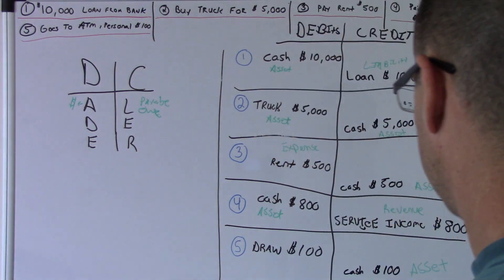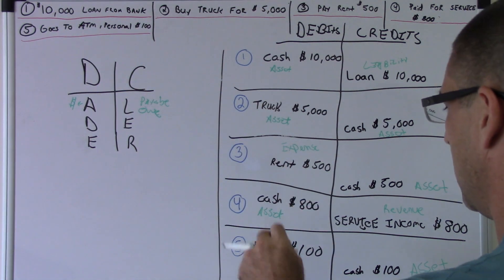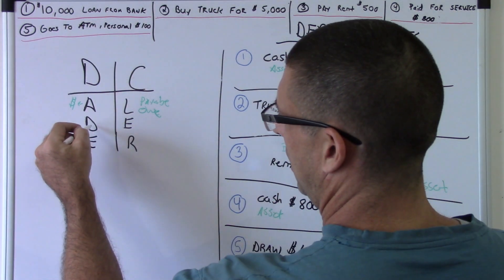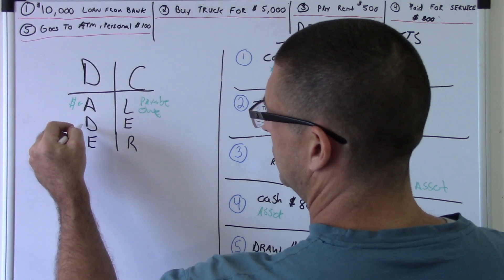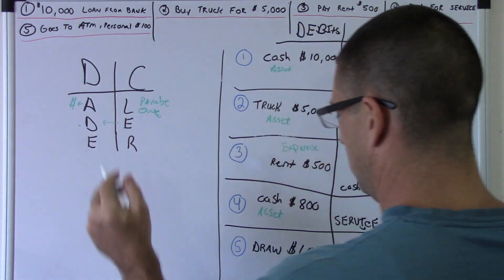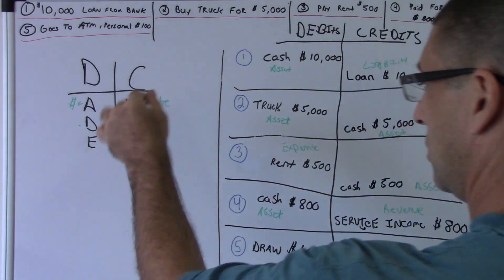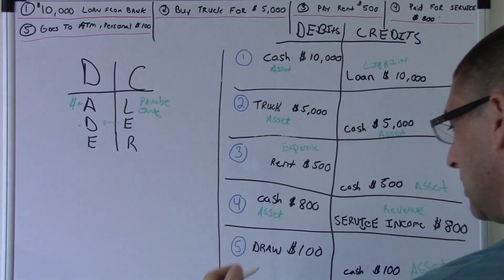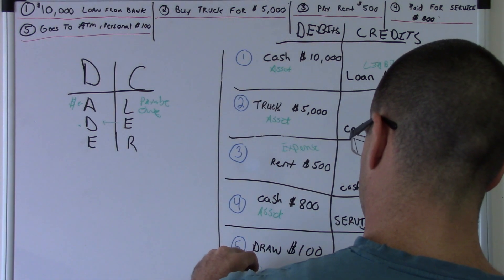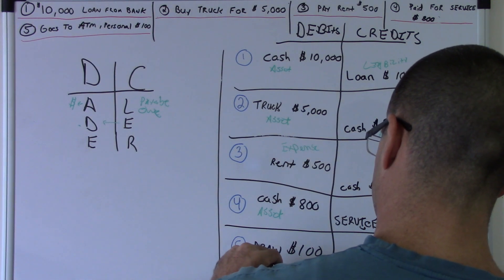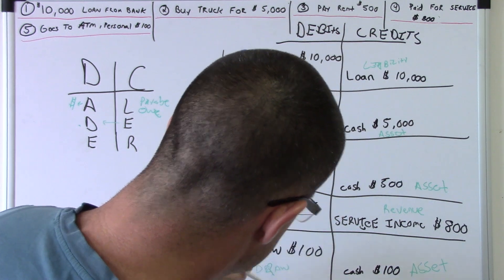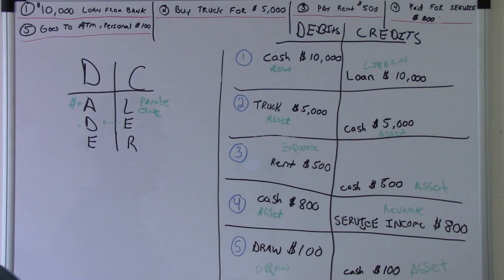The only category we don't have left is a draw — or a distribution. That's going to be this one here. It's pretty much the other side of equity, but a draw is its own draw account.